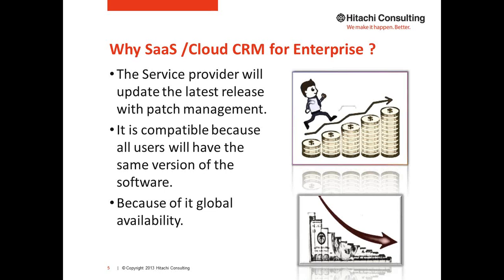For example, if you take Salesforce or Fusion CRM, the entire release management is taken care of by the respective vendor. Whenever a new product is released, it is automatically available to all users who subscribe to the application. The version compatibility is the same — the same version and same functionality is given to a broader audience, and it is available globally.